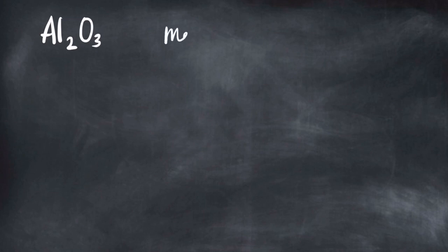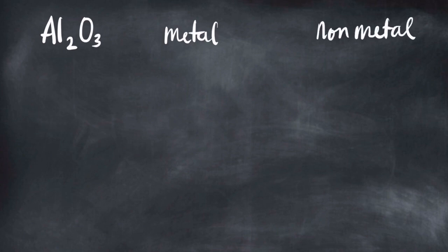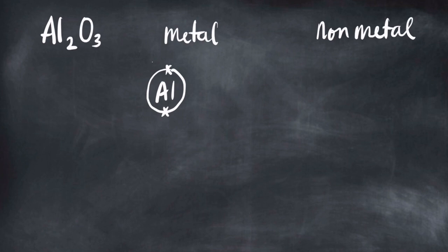Now that we know the formula is Al₂O₃, let's do the dot-cross diagram. When you do the dot-cross, you start with the metal first — do not do oxygen first. Metal, then non-metal. Unless told otherwise, use all electrons, not just valence electrons. So for aluminum: the first shell takes 2, then the next shell takes 1, 2, 3, 4, 5, 6, 7, 8.